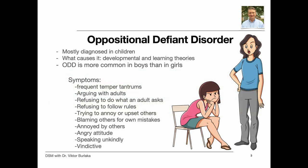Oppositional defiant disorder — ODD — is a type of behavior disorder. It is mostly diagnosed in childhood. Children with ODD are uncooperative, defiant, and hostile toward peers, parents, teachers, and other authority figures. They are more troubling to others than they are to themselves.